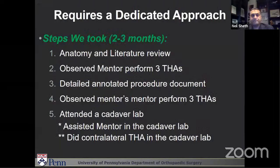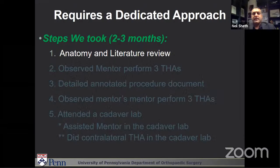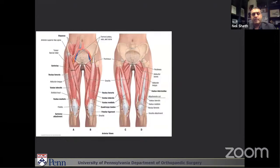When you're switching from posterior to anterior, it requires a very dedicated approach to actually making the switch. The steps we took took about a good three months to make sure we did it right. Here are the five different steps. Number one is anatomy and literature review. I was comfortable with all the anatomy around the hip; however, I'm just not used to seeing it from this perspective. Seeing it from the front was very different than seeing it from a posterior approach. I spent time really re-familiarizing myself with looking at the hip from the front.